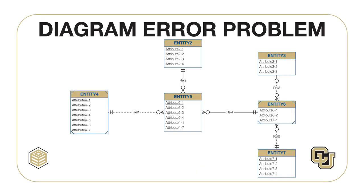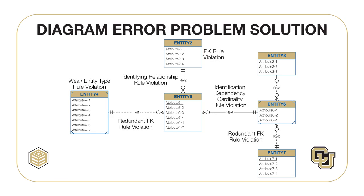For each diagram error in this ERD, you should identify the consistency rule violated and suggest possible resolutions. The ERD uses generic names such as Entity 2 so that you will concentrate on finding diagram errors rather than focusing on the meaning of the diagram. The ERD contains six diagram errors. The primary key rule violation is simple to identify by the missing underlined column in Entity 2. The other rule violations are more difficult to identify and explain. I encourage you to explain each rule violation before reviewing the solution document.